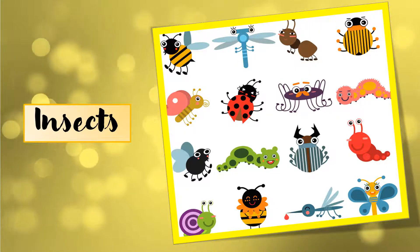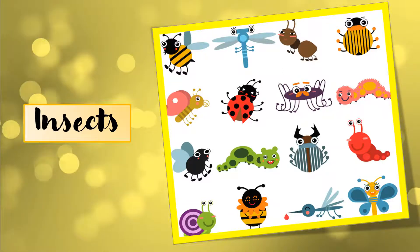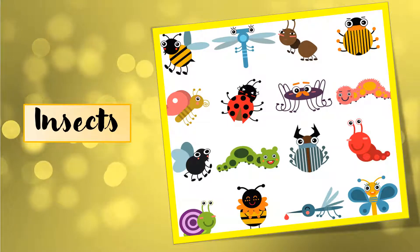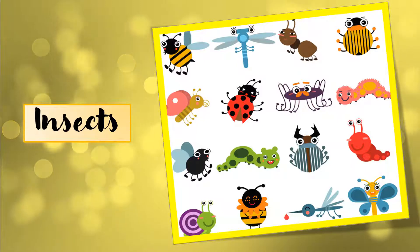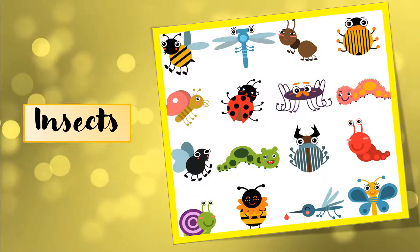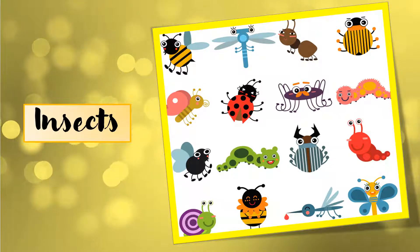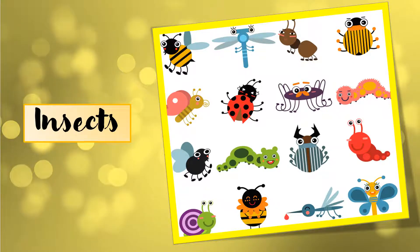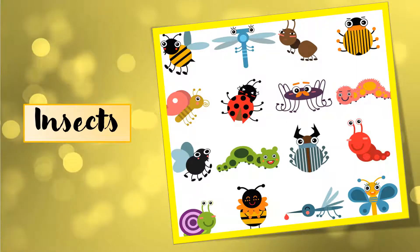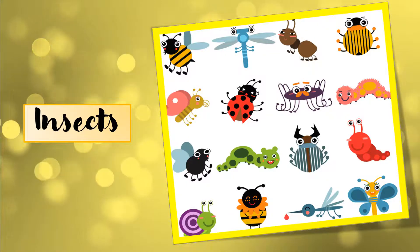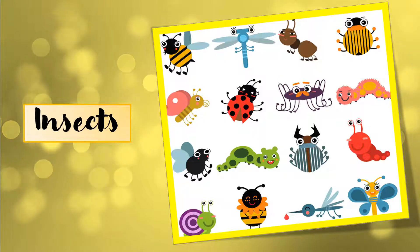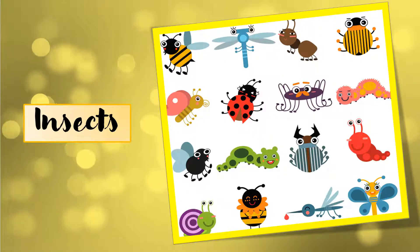But don't get confused between insects and birds. Insects and birds are different from each other. Birds have two wings, but some birds can fly and some cannot. All birds have two wings, lekin kuch birds fly kar sakte hain aur kuch nahi kar sakte. Whereas insects, they may have wings and they may not have wings. Kuch insects ke wings hoti hain aur kuch ke nahi hoti hain.